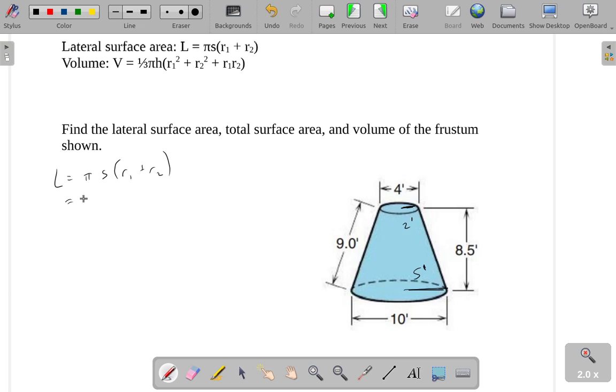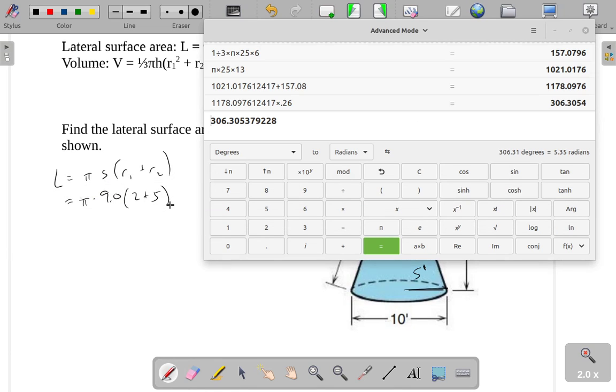So that means my lateral surface area... I'm missing something. Oh no, s. Okay, it's right there. We have pi times 9.0 times 2 plus 5. So I'll just plug that into the formula. Pi times 9 times 7, which gives me 197.9.